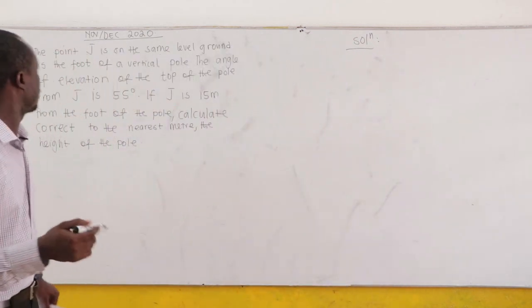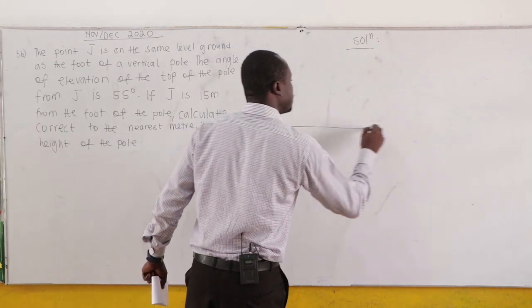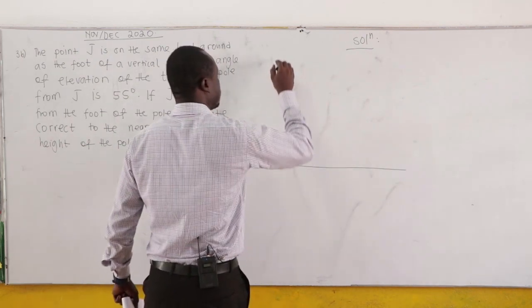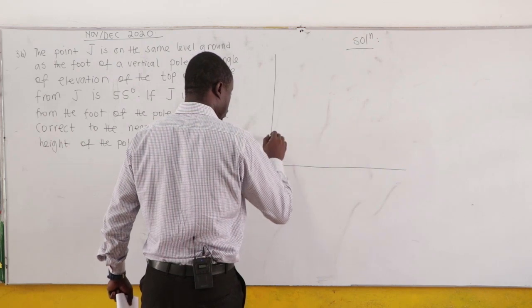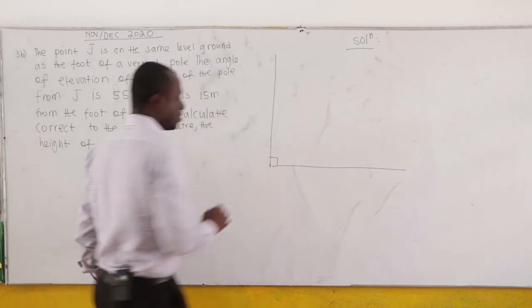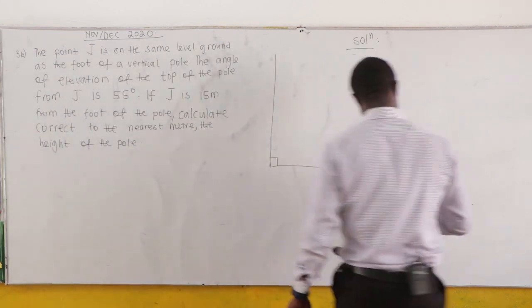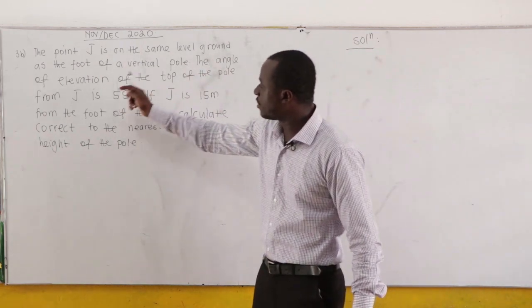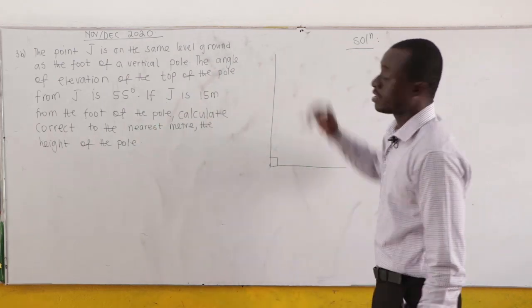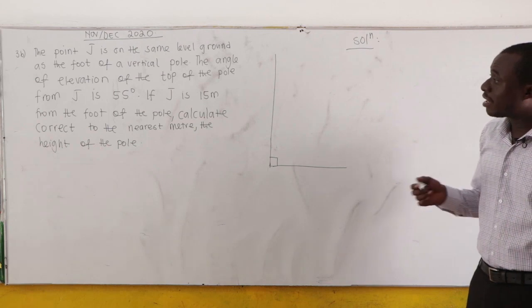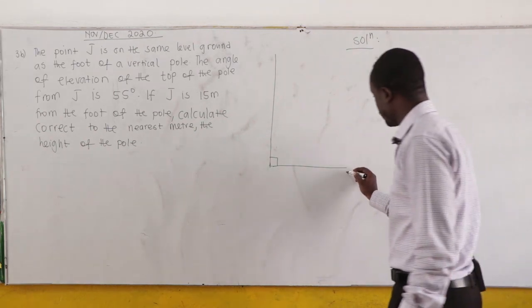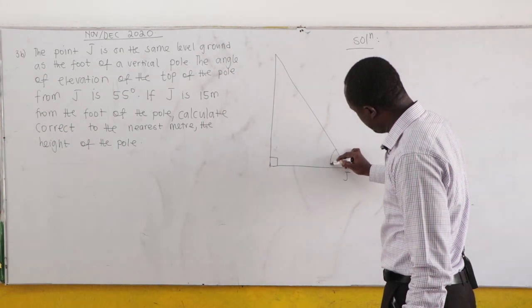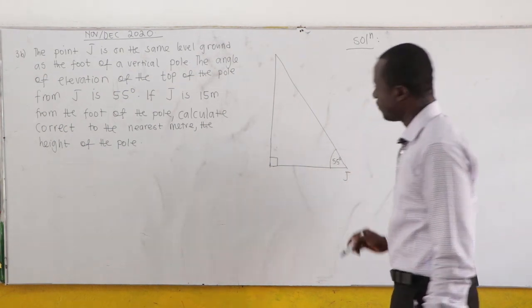Now for the next problem. Point J is on the same level ground as the foot of a vertical pole. The vertical pole makes a 90-degree angle with the ground. We are told that the angle of elevation of the top of the pole from J is 55 degrees.